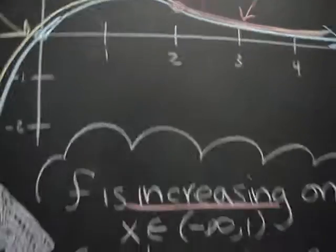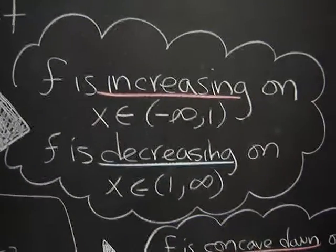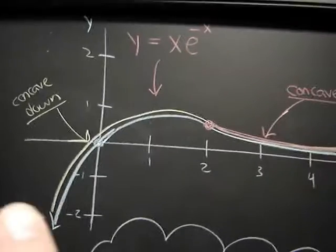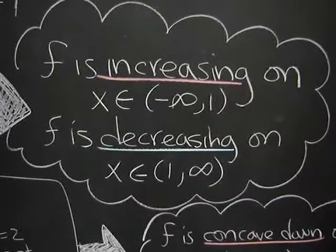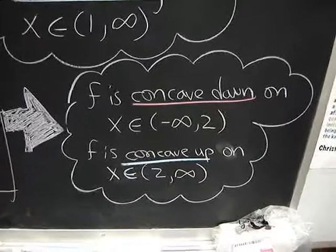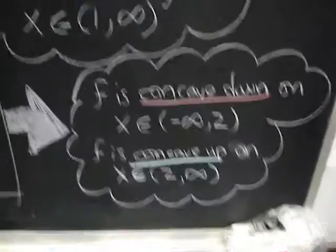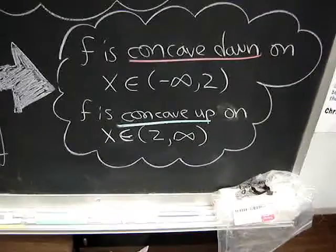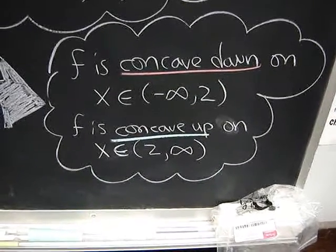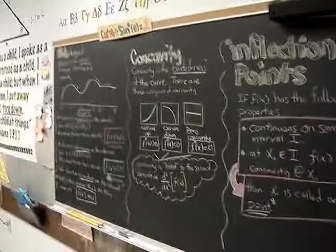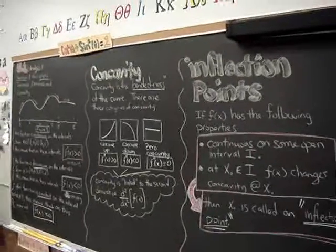Let's go ahead and write our intervals of increase and decrease. The function f is increasing on the interval from negative infinity to 1, where the first derivative is positive. Decreasing on the interval from 1 to infinity, where the first derivative is negative. Lastly, f is concave down on the interval from negative infinity to 2, and concave up on the interval from 2 to infinity. And that is Lesson 5.1. God bless you wherever you are today.